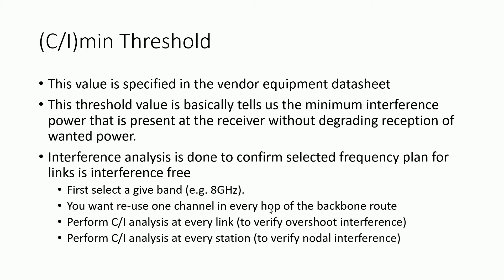The analysis works like this: you are given a band of frequency, like 8 GHz, assigned by the operator, and you want to use as few channels as possible for all your backbone links — say 10 to 15 backbone links connecting sites that are 500 kilometers apart. You need to use the same frequency for all the links. It is possible to avoid interference, and we need to do C/I analysis at every link and for every station.